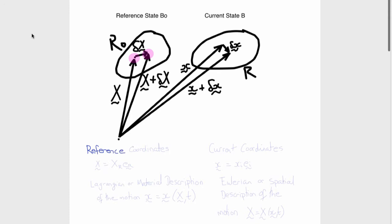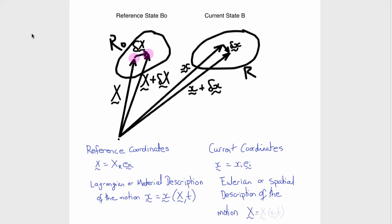The reference coordinates are components of the position vector capital X, and the Lagrangian, or material description of this motion, is little x equals little x of big X and t. The current or deformed coordinates are components Xi of the position vector little x, and the Eulerian or spatial description of this motion will be big X equals big X of little x and t.